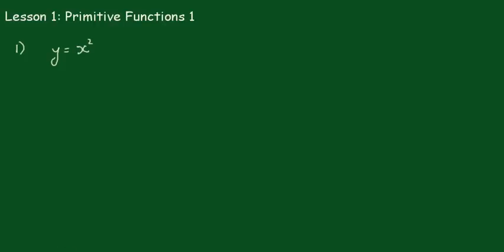Okay, this is Calculus 2 Lesson 1: Primitive Functions Number 1. And you see here we have the function y equals x squared.